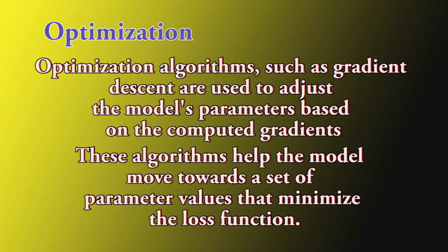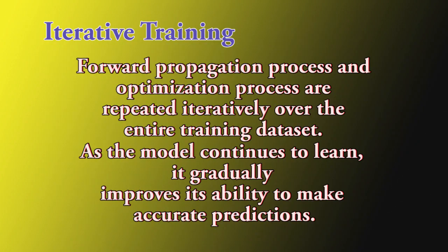Optimization: Optimization algorithms, such as gradient descent, are used to adjust the model's parameters based on the computed gradients. These algorithms help the model move towards a set of parameter values that minimize the loss function. Iterative training: The forward propagation process and optimization process are repeated iteratively over the entire training dataset. As the model continues to learn, it gradually improves its ability to make accurate predictions.